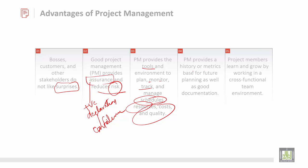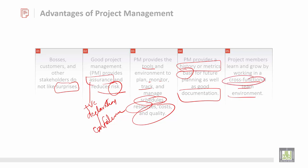The fourth advantage is that project management provides a history of metrics — it compares every time with the previous one, and it acts as a base for future planning, as well as providing good documentation. Finally, members of the project learn how to grow by working in a cross-functional team — people working with other departments to solve project-related issues in a very efficient manner.